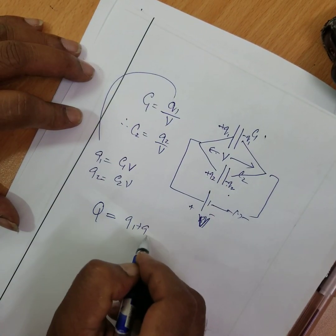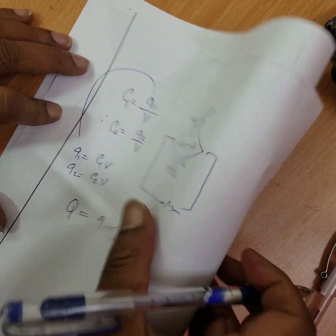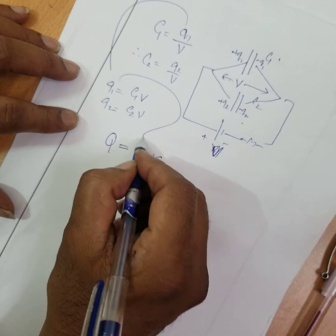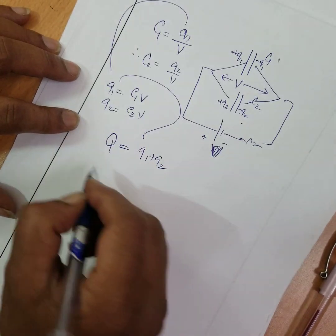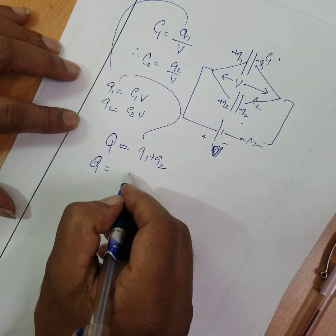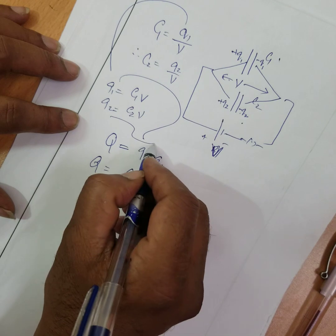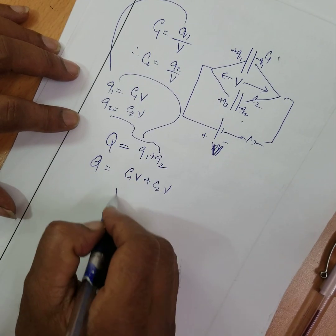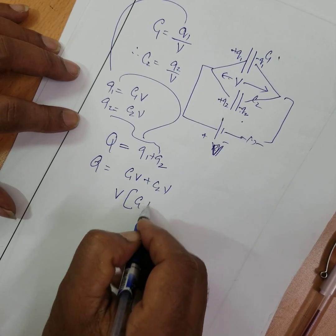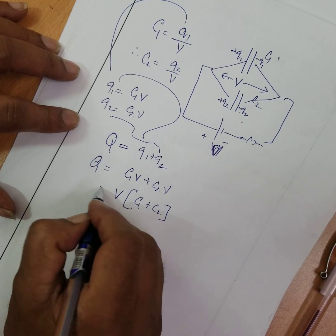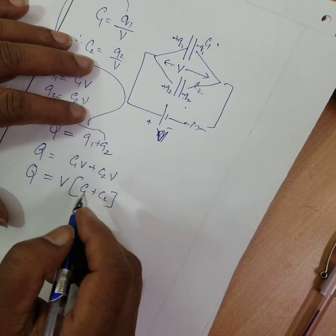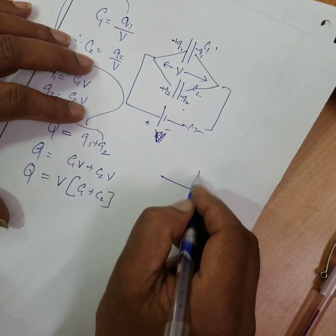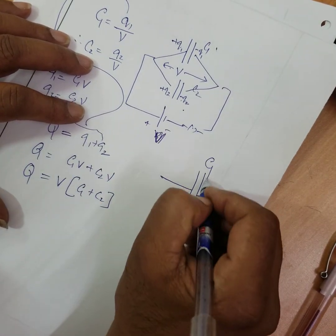The total charge Q is equal to Q1 plus Q2. Substituting Q1 = C1V and Q2 = C2V, we get Q equal to C1V plus C2V. Taking V as the common factor, Q is equal to V times the quantity C1 plus C2.